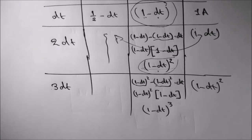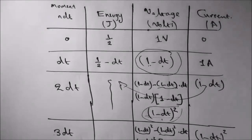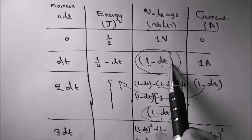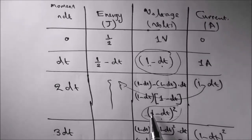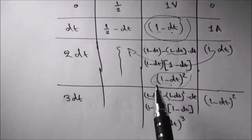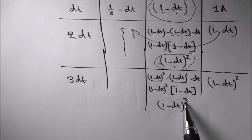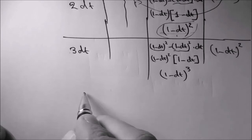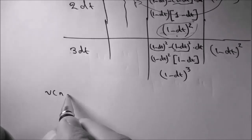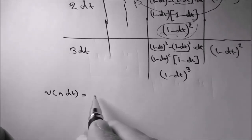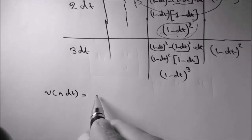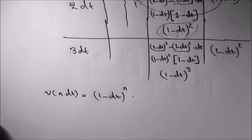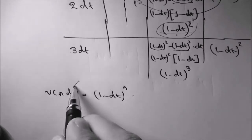Now you can continue in a similar way. It's obvious that when t equals dt, we had a voltage of (1 minus dt); when t equals 2·dt, we had a voltage of (1 minus dt)²; and when t equals 3·dt, we had a voltage of (1 minus dt)³. So we can derive the formula: V(n·dt) equals (1 minus dt) to the power n.